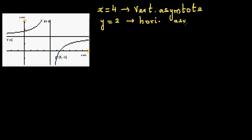A horizontal asymptote tells you about the graph's behavior. This branch of the graph is approaching 2 from above, so it will always be above 2. The other branch is always going to be under 2 — so it's either above 2 or less than 2. The vertical asymptote tells you where the function is not defined.